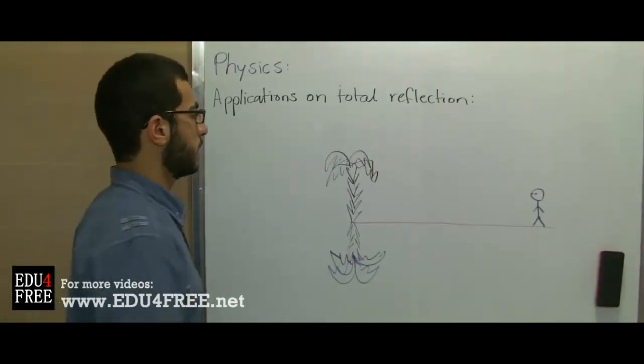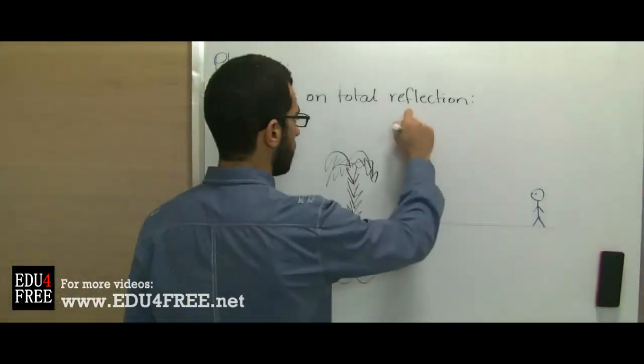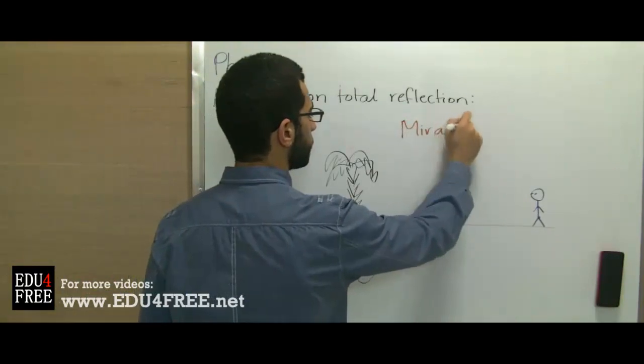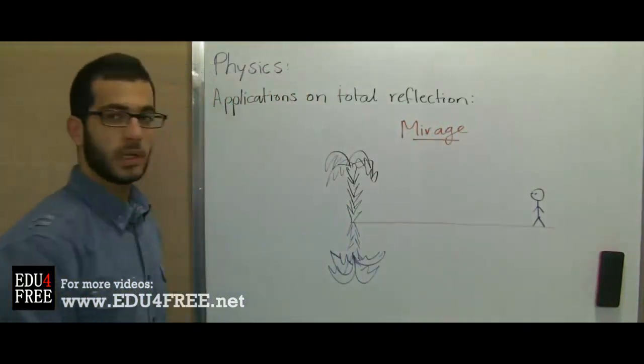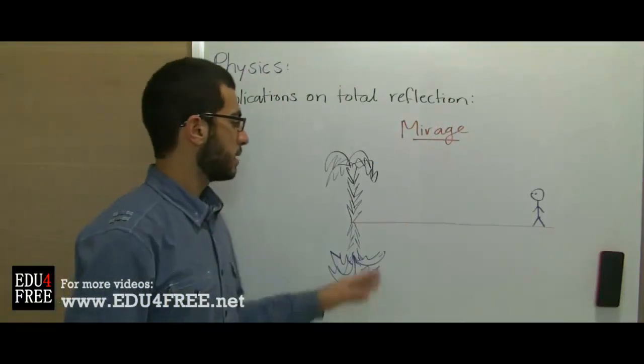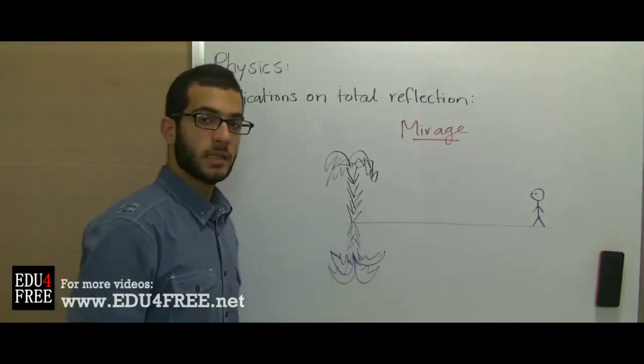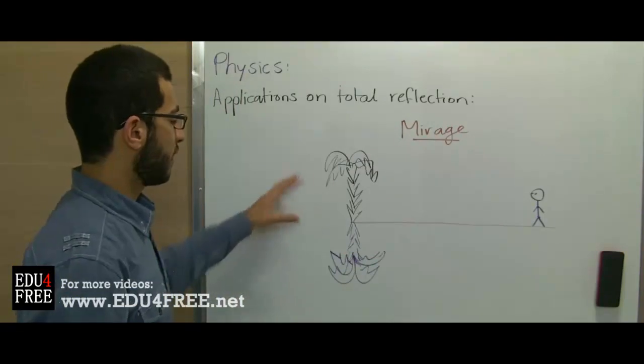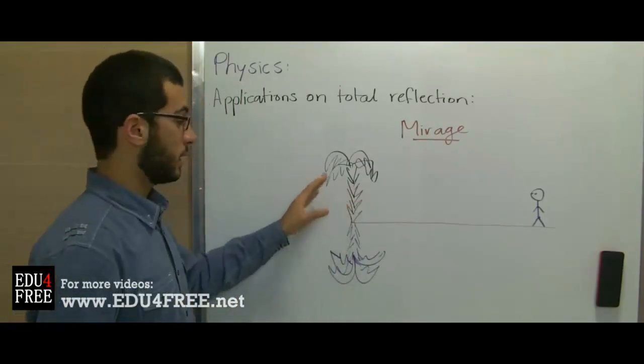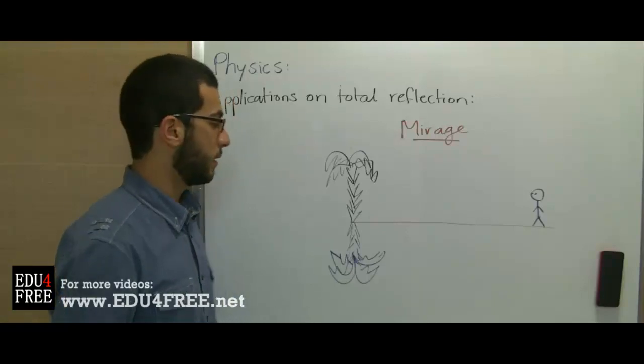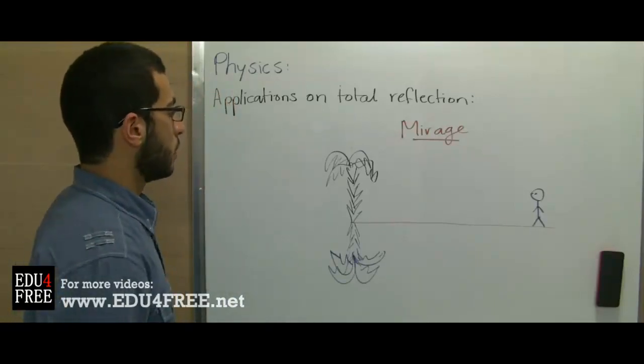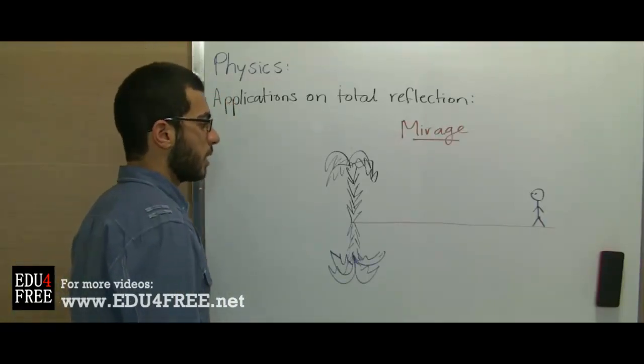The last thing that we are going to talk about is mirage. So if somebody is in the desert and he sees in the sand the shiny spots where the reflection of the objects around it is found, so he thinks that this is a water pond. Well it's nothing in the sand. So this is what happens.